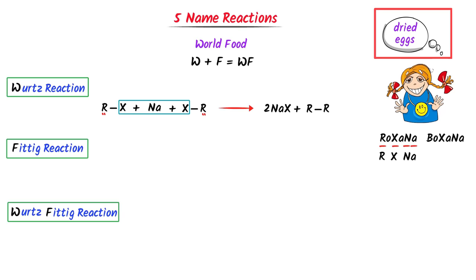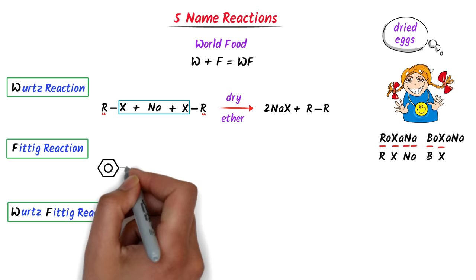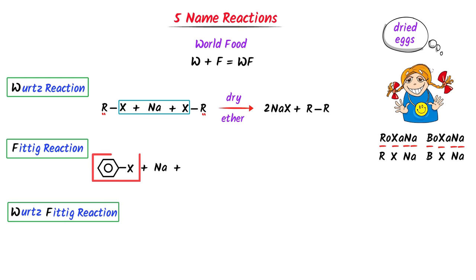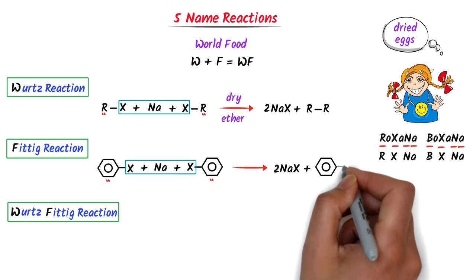In case of the Fittig reaction, I consider Buxana. This B stands for benzene ring and X (halogen) is attached to it, plus sodium, plus benzene-X rewritten. Sodium will react with the two halogens to form two sodium halide, and this benzene ring and the other benzene ring join together to form diphenyl. The dried X stands for dry ether. Thus, this is the Fittig reaction.